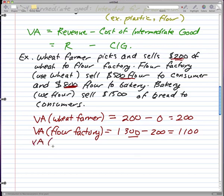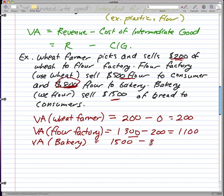The value added of the bakery: they made fifteen hundred dollars, and they bought eight hundred dollars of flour from the flour factory to make into bread. So their value added is seven hundred dollars.